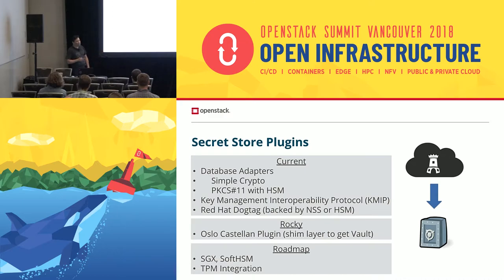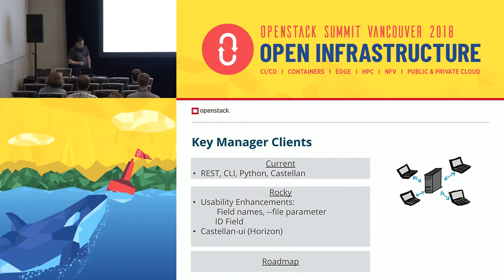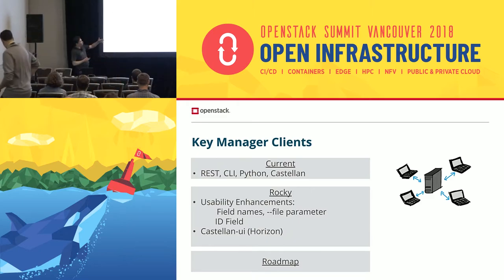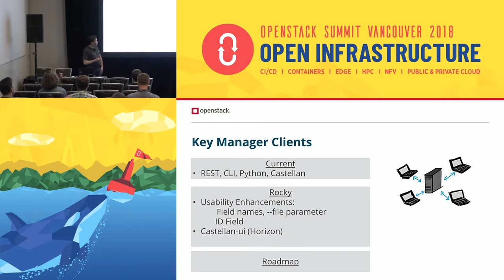In terms of clients, there's a REST API, a CLI, a Python API, and Castellan — used by various projects to talk to Barbican. In Rocky we have some usability enhancements: there's a file parameter that allows clients to store keys retrieved from Barbican, an ID field, and there's a Castellan UI that folks are working on as well.